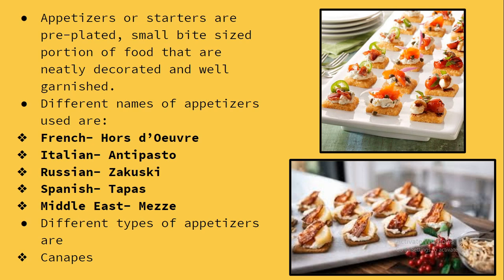The different types of appetizers we encounter: the first one is the canapé. Canapés are a type of hors d'oeuvre — a classification under hors d'oeuvres. These are small, prepared, and often decorative food consisting of a small piece of bread, puff pastry, or a cracker as the base, topped with savory food such as meat, fish, vegetables, and dressing. They are held in the fingers and often eaten in one bite.